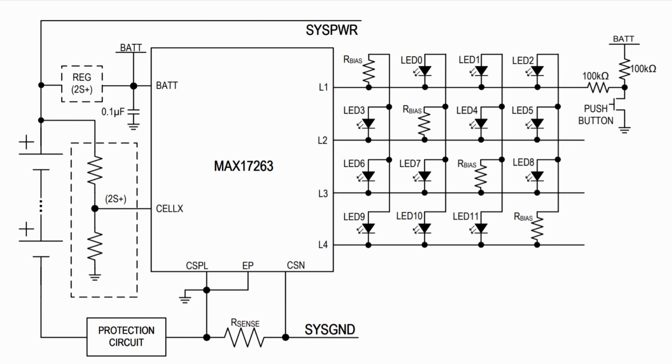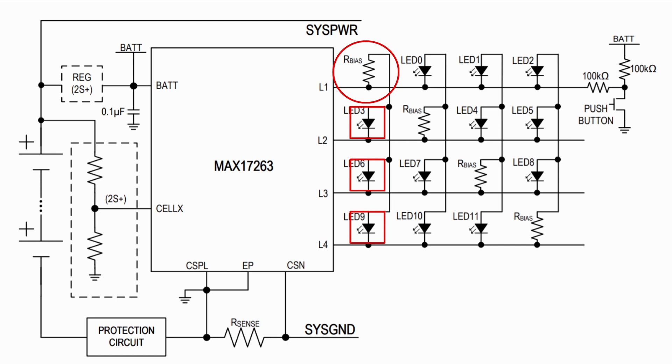In this circuit, only one LED is lit at a time by applying output logic to two of the pins and setting the others to high impedance. For example, to light LED 3, we would need to apply a high voltage to L1 and a low voltage to L2 so that current flows through the bias resistor and LED 3. Because only one LED is on at a time, we can share bias resistors if the LEDs are identical.